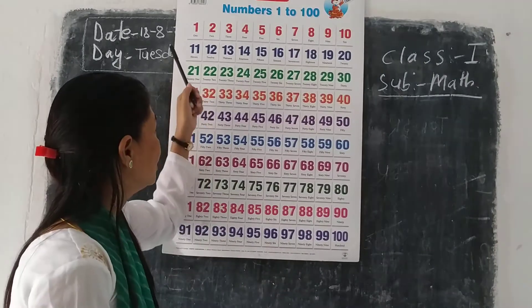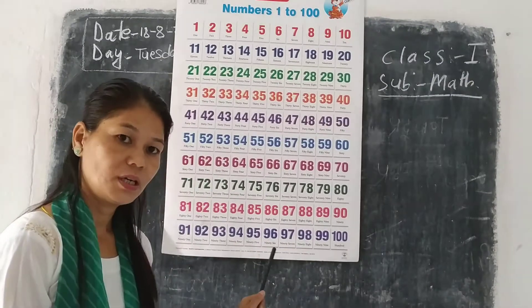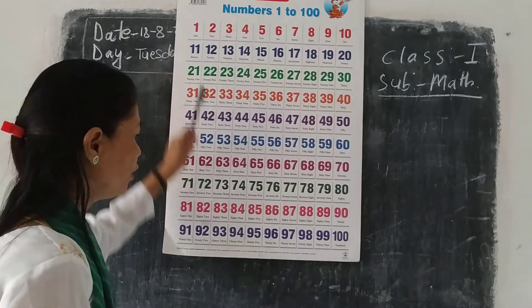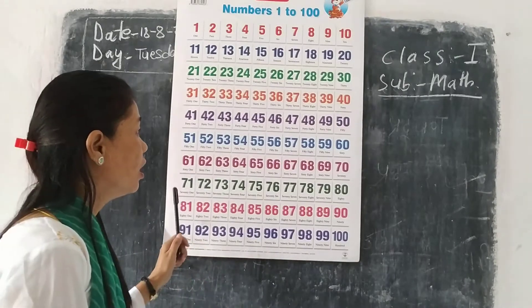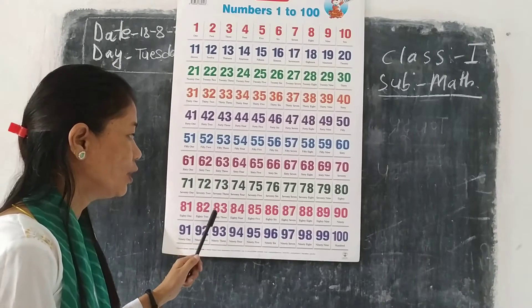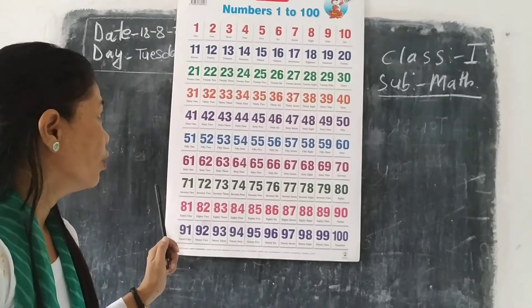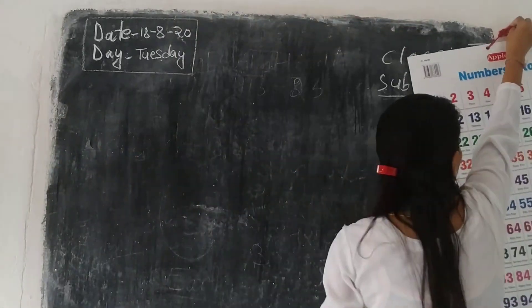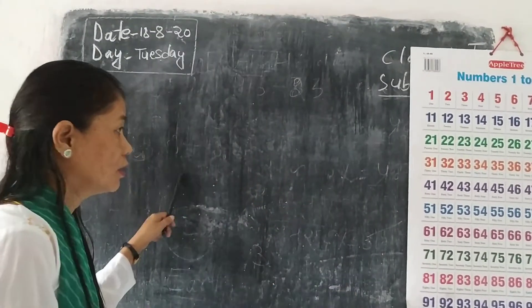Okay. Today we apply on 1 to 100. I'll give homework in group, so that 1 to 100 you write in your copy also. Then next we do numbering — write in words.